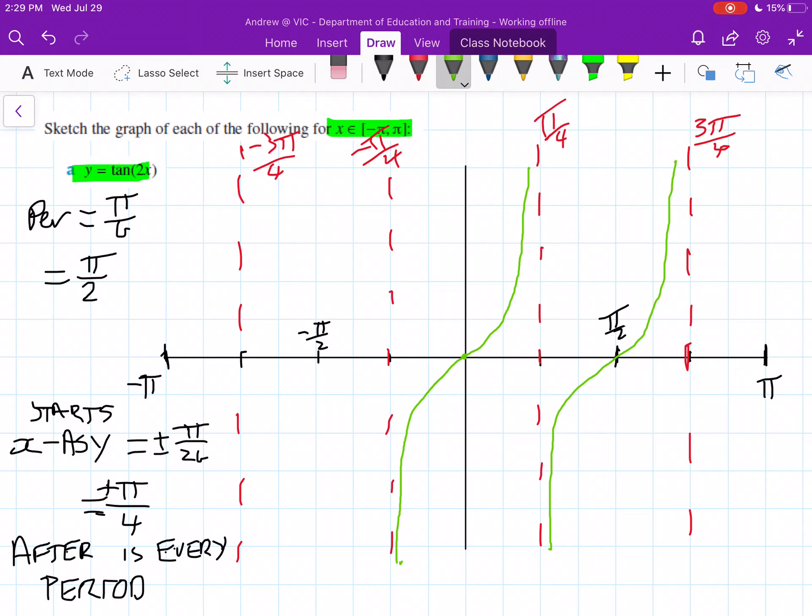This one only goes over half the period, so we only need to draw the first half of it. So the first half of it, and then we stop there. If you go any further, you're actually going outside that domain. Technically that's wrong.